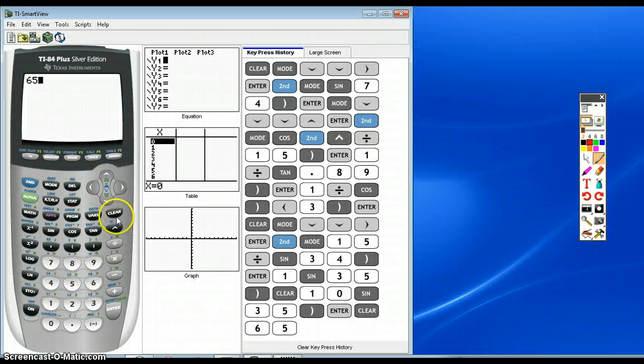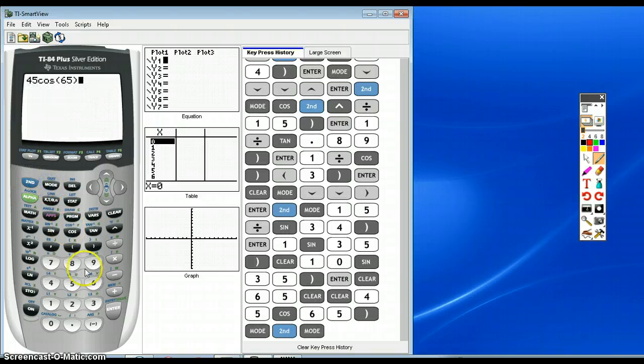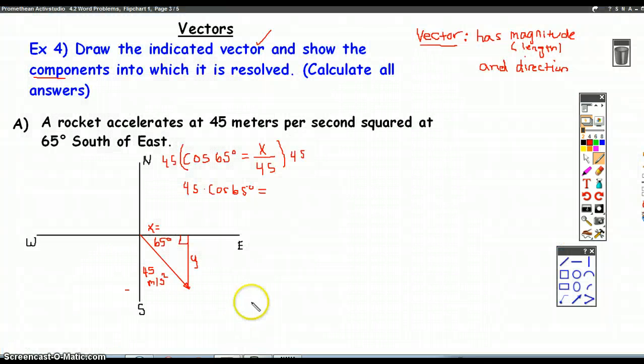Put that in the calculator. 45 times cosine of 65. And let's just double-check where degrees, yep. 19.018.